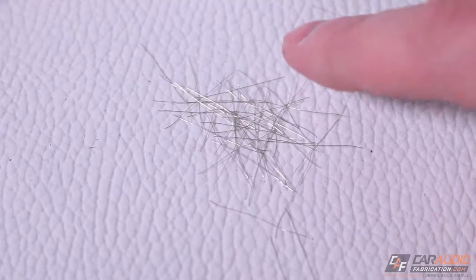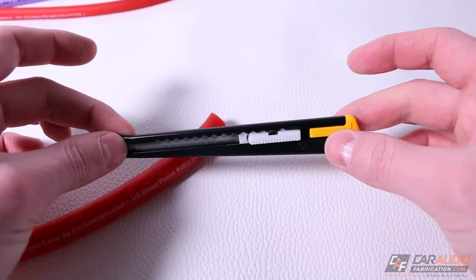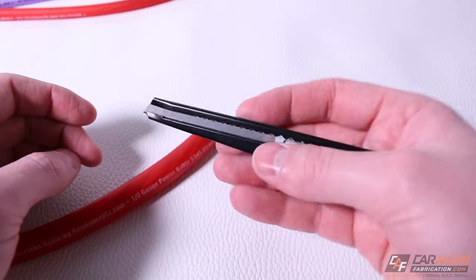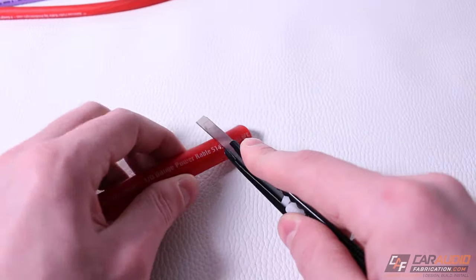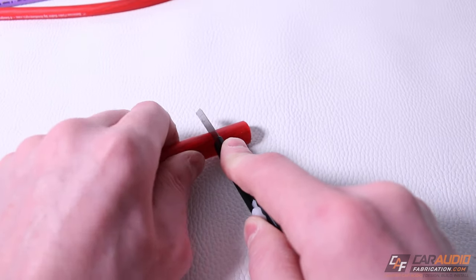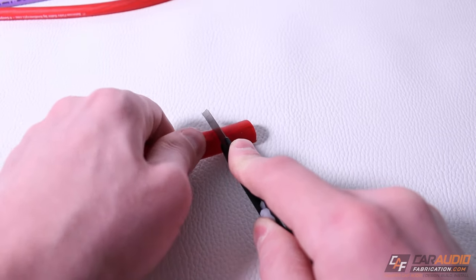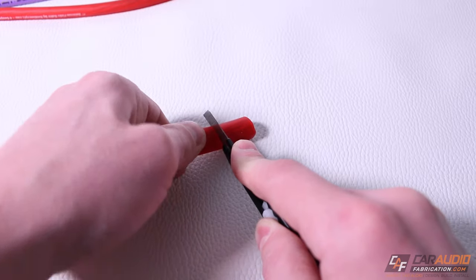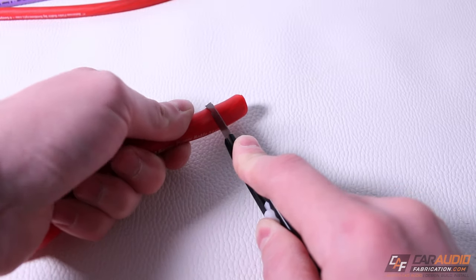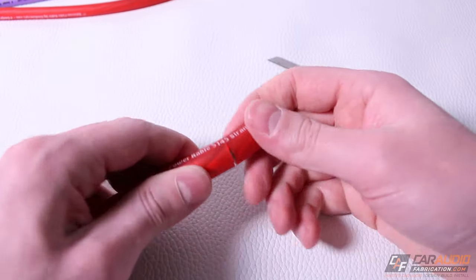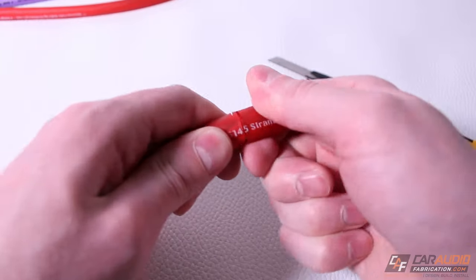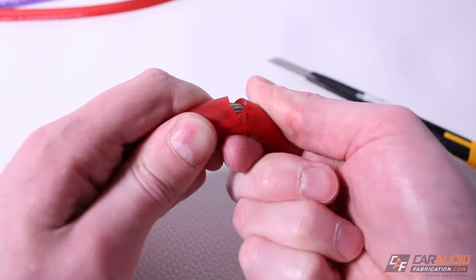Another option, and this is what I used to prefer, is using a nice sharp utility knife. What you'll do with this is slowly work your way into the insulation. You have to spin the wire around as you go and use care not to cut too far through the insulation. Once you get far enough through, you can work it back and forth and break it apart.